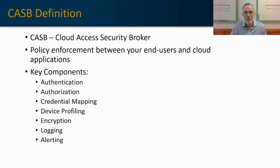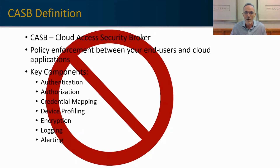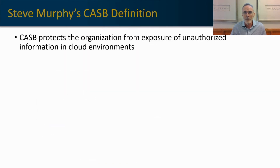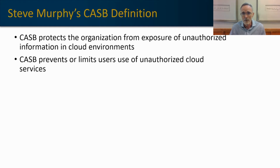I don't like this definition because a lot of people, when they read it, are going to say: I do all that stuff already with the tooling that's already in place — why do I need a CASB? So I prefer more of a functional definition. CASBs protect the organization from exposure of unauthorized information in cloud environments. They allow people to access those cloud environments but control what can be done within them — something the traditional definition really doesn't convey.